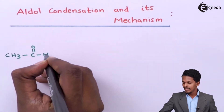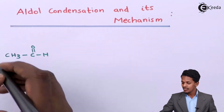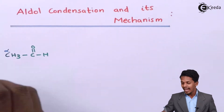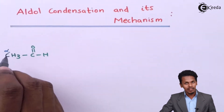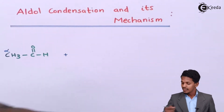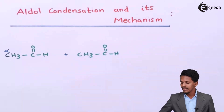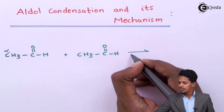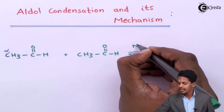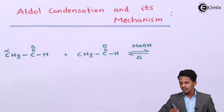The aldehyde group is present, and the carbon atom attached directly to the aldehyde group is considered the alpha carbon atom. All hydrogens present on this alpha carbon are called alpha hydrogen atoms. When this aldehyde reacts with another mole of aldehyde (CH3-CHO) that also has alpha hydrogen, this is a reversible reaction conducted under basic conditions using NaOH or KOH at moderate temperature.